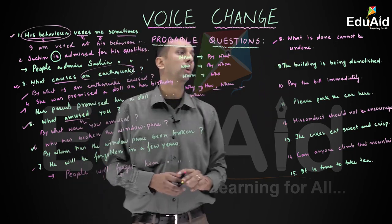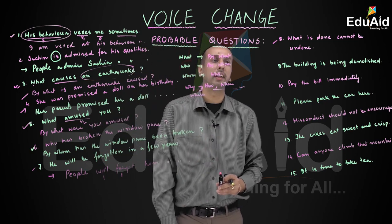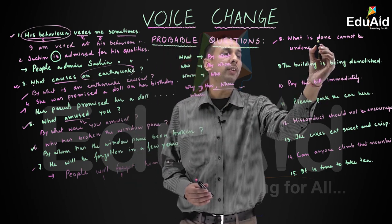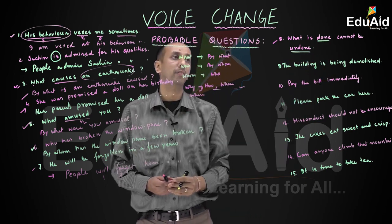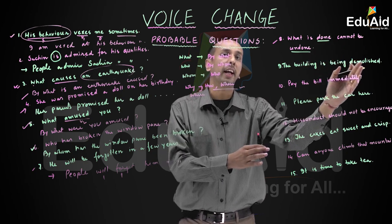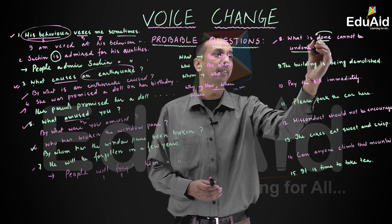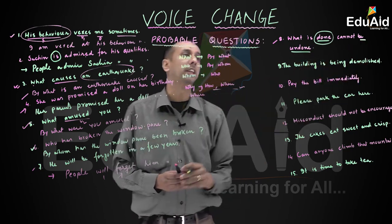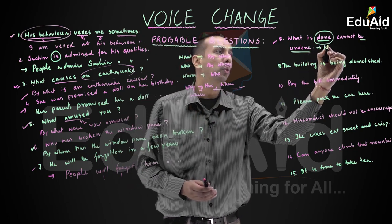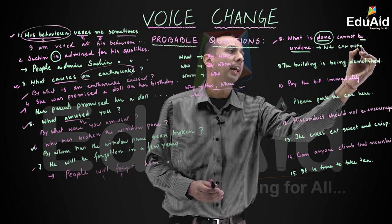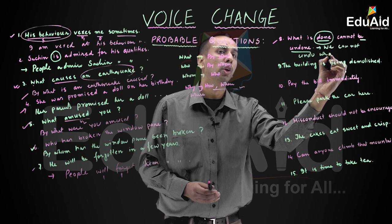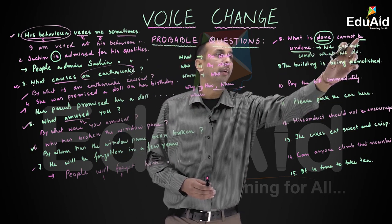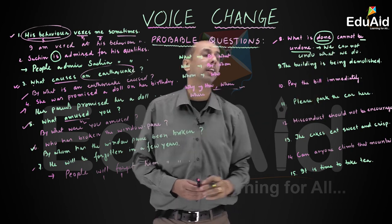Question number eight: 'What is done cannot be undone?' — a famous line from Shakespeare's Macbeth. Pay attention: there are two verbs here, both in passive form. When converting, we get: 'We cannot undo what we do.' The tense is present, and 'cannot' drops the passive and takes the V1 form 'undo.'